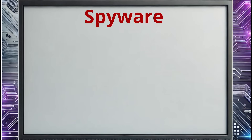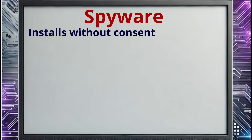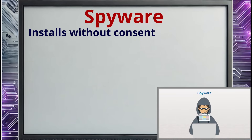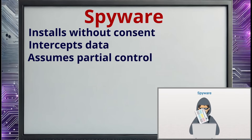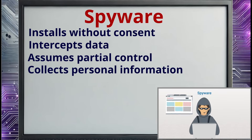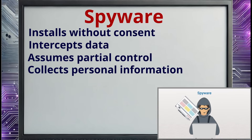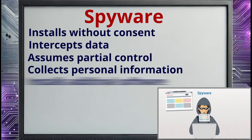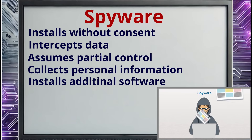Next, let's look at spyware. Spyware is software that gets installed on a system without the user's consent or knowledge, and it's very insidious. It's designed to intercept data or even assume partial control over the computer. As its name implies, spyware is designed to collect personal information about the user, such as their internet surfing habits. It may even capture their website password. Spyware generally uses some type of tracking cookie to collect and then report on a user's activities. Spyware may also install additional software, change computer settings, or redirect the web browser to unwanted websites.